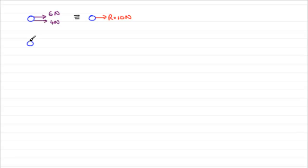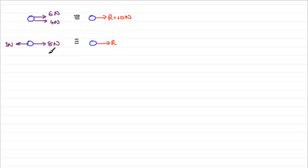What happens if we had another particle and this time we had a force of 8 newtons to the right and a force of 3 newtons to the left? That's going to be equivalent to our particle having a resultant force R of 5 newtons to the right — a bit like a tug of war. If you've got 8 newtons that way and 3 newtons that way, this team's going to win with a force of 5 newtons.